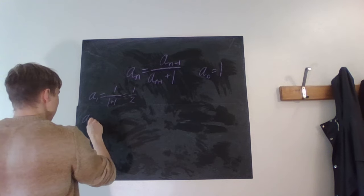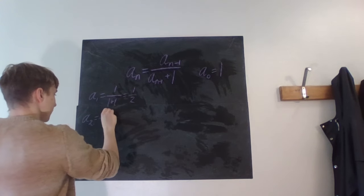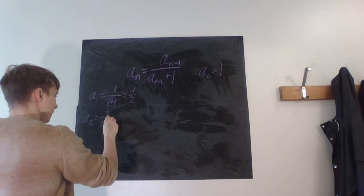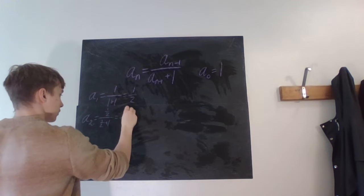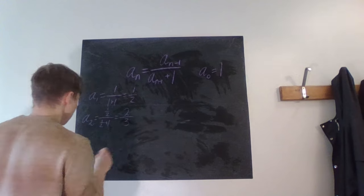And then a_2, what is that? That is one half over one half plus one, which if we multiply by two everywhere, we get two over three.